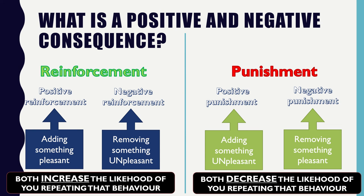Negative punishment is the more powerful form of punishment — it involves taking away something that you enjoy. For example, if you hurt a sibling, a parent might take away your computer or mobile phone. Removing something you enjoy as a consequence decreases the likelihood that you will repeat that behaviour. So there are two different types of both reinforcement and punishment.